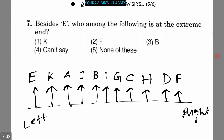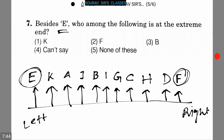The next question is: besides E, who among the following is at the extreme end? F is at the extreme end, so option two is the correct answer, that is F.